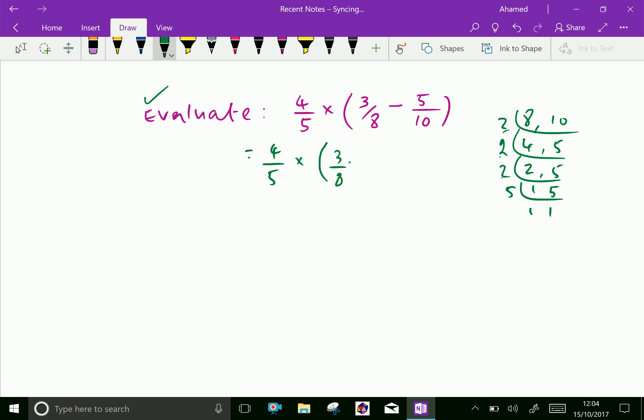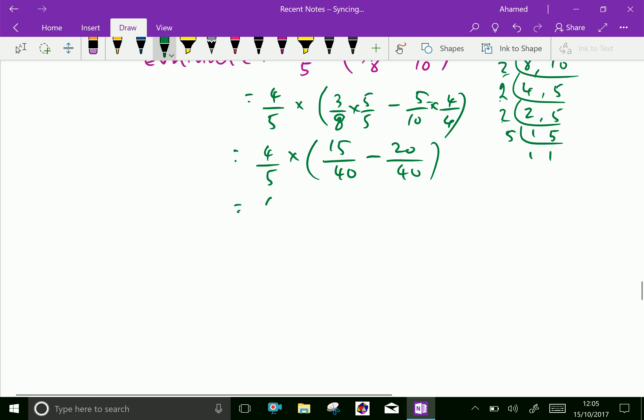So 3 over 8 into 5 is 15 over 40 minus 5 over 10 into 4 is 20 over 40. We get 4 over 5 into, 40 is common denominator, then 15 minus 20 is minus 5.